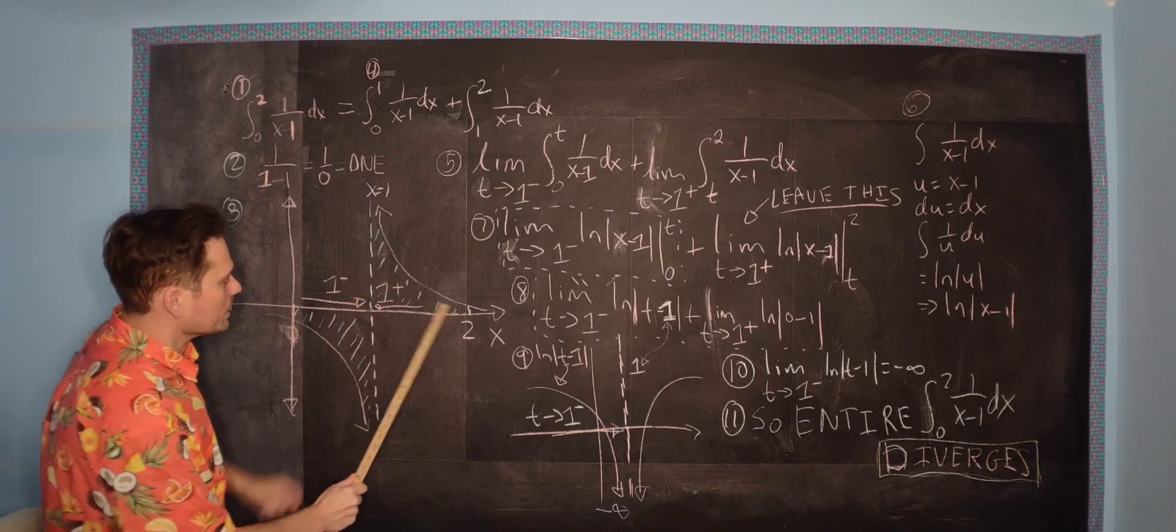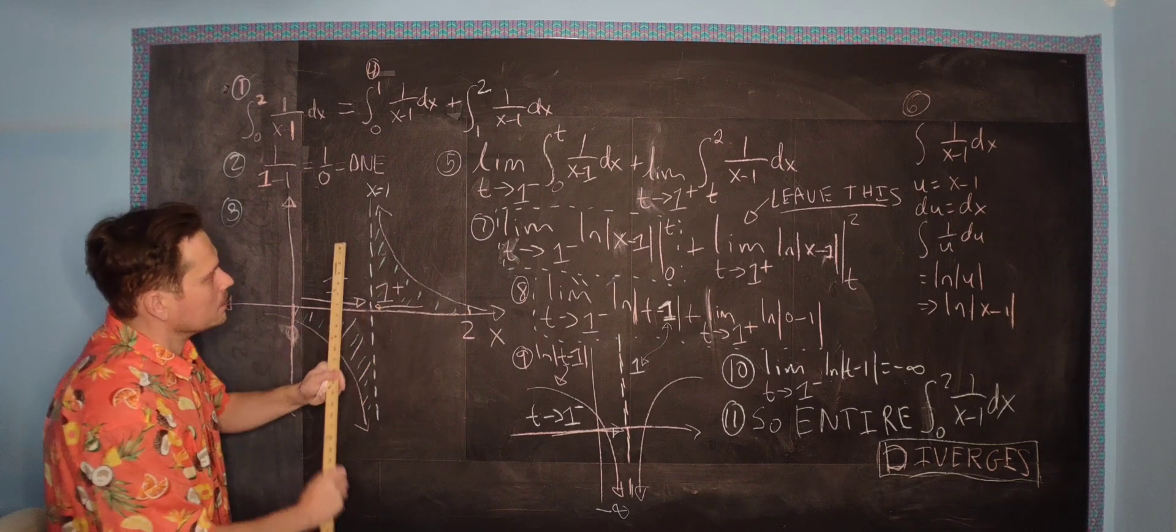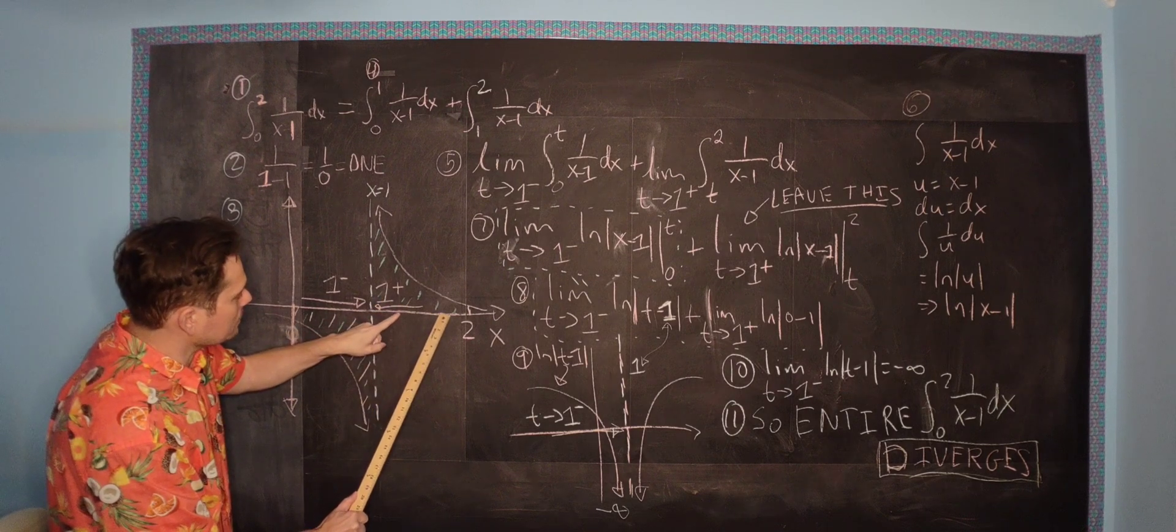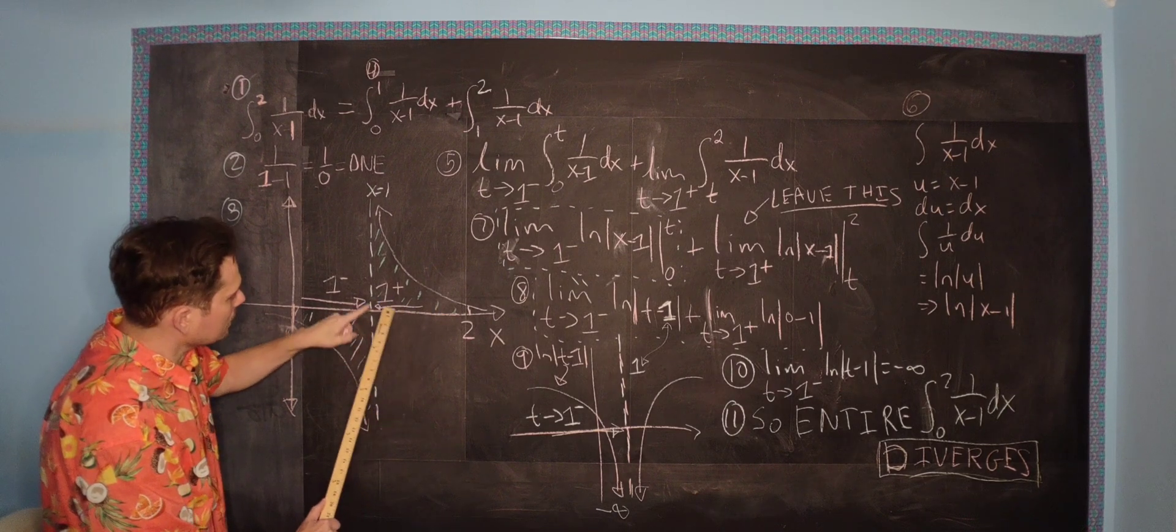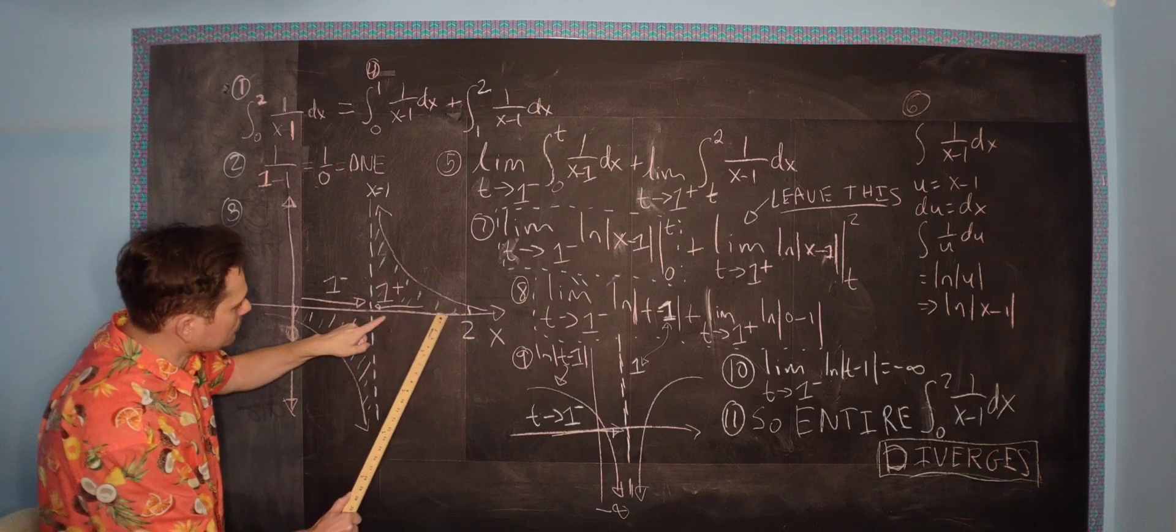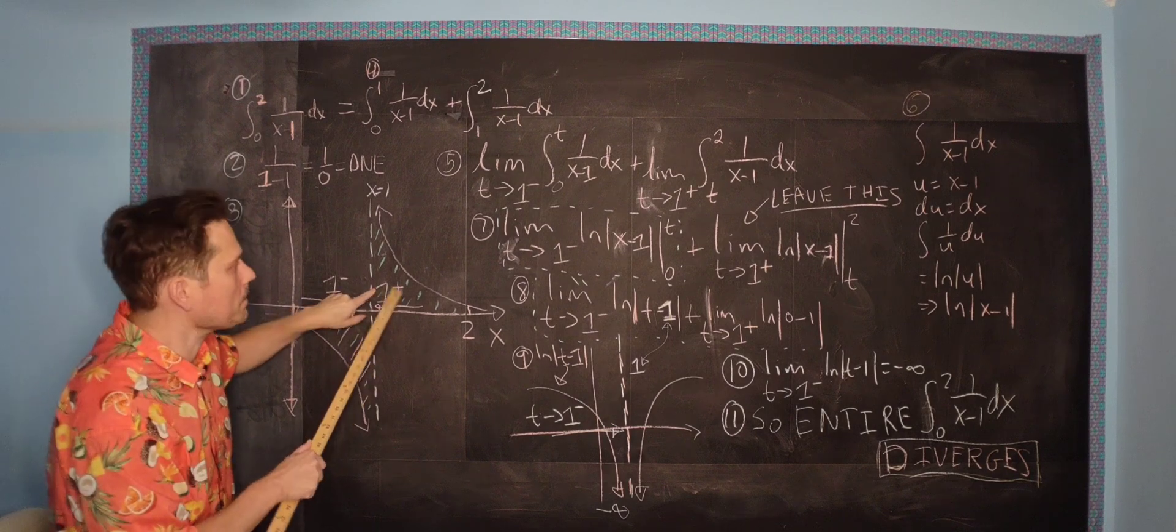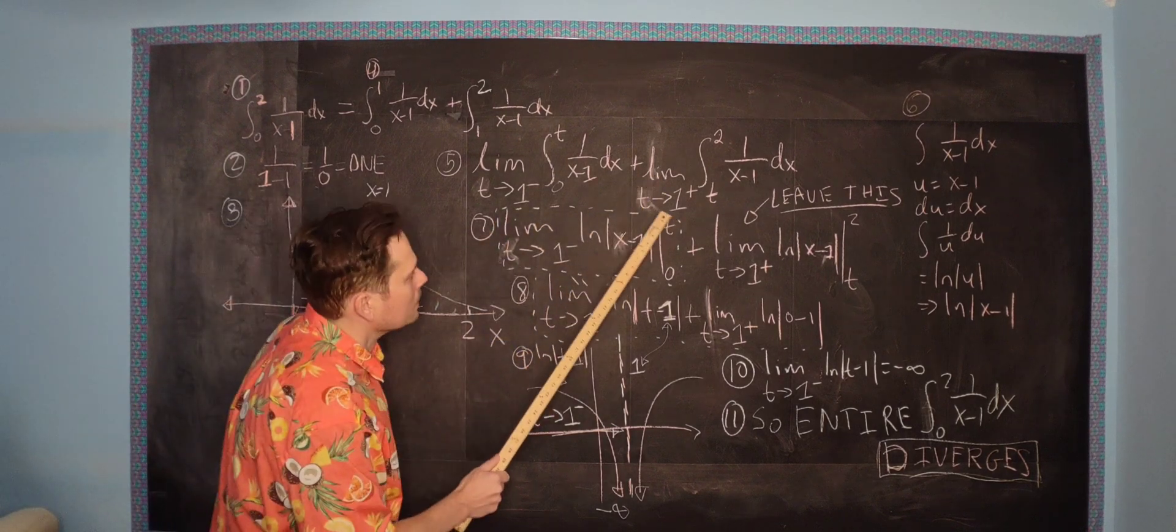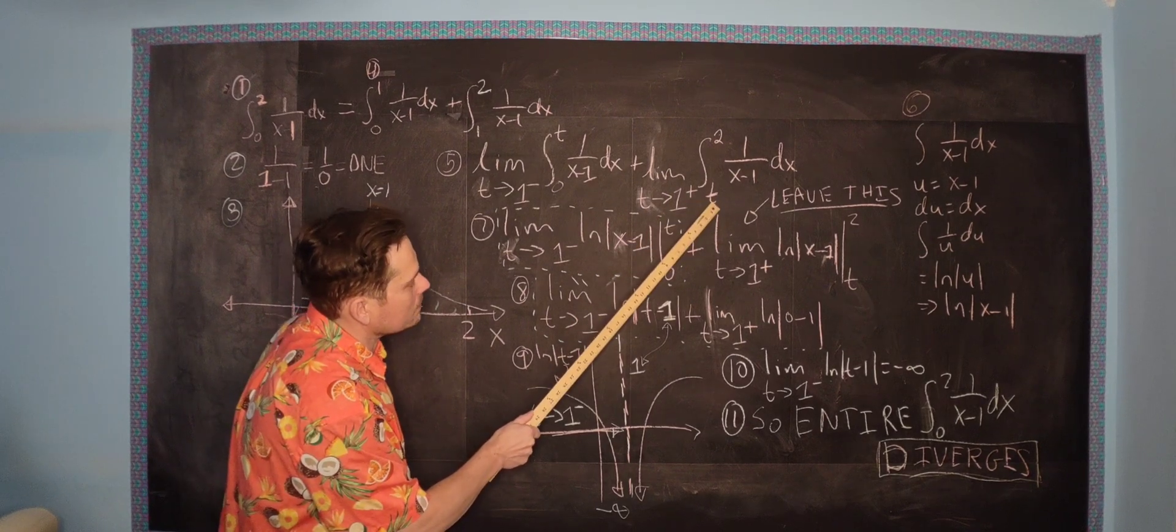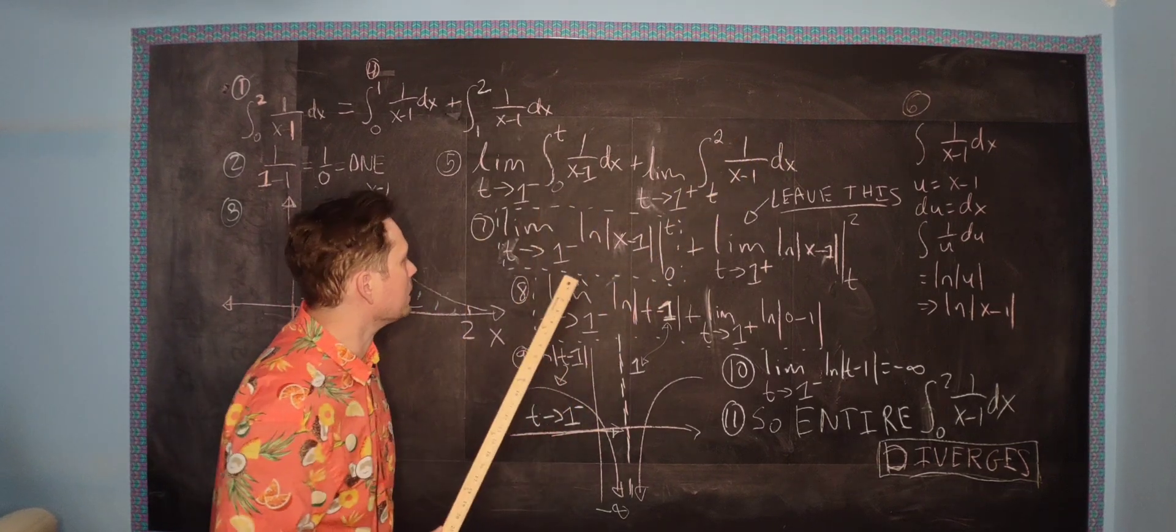Look at the right side of it now. You're going to integrate from 1 to 2 because the 2 follows the 1. But you're going to approach t equals this value of 1 from the right side. So you're going to have the limit as t approaches 1 from the right side, and then you're going to integrate from t to 2, and it's 1 over x minus 1. That's step number 5.